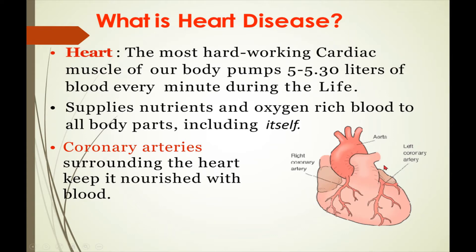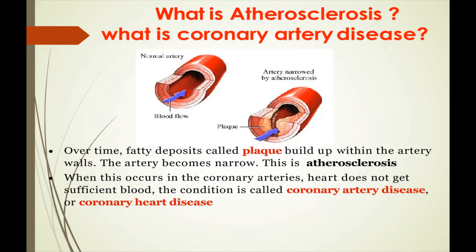Two coronary arteries supply the heart with blood through nutrients. This one is the left coronary artery and this one is the right coronary artery. The primary left coronary artery branches into secondary and tertiary arteries.